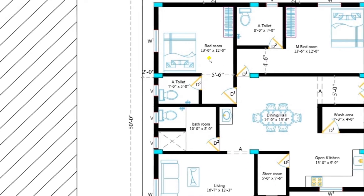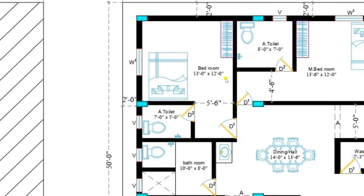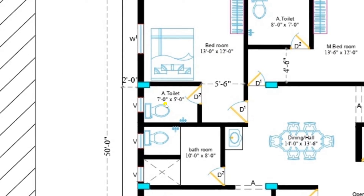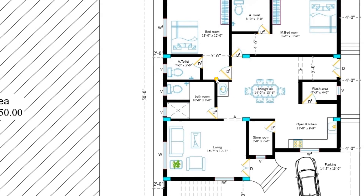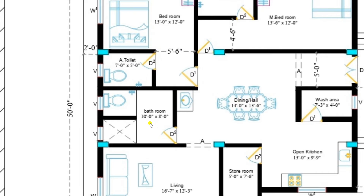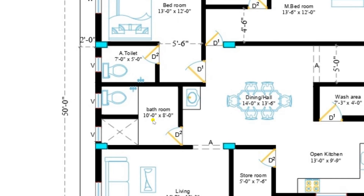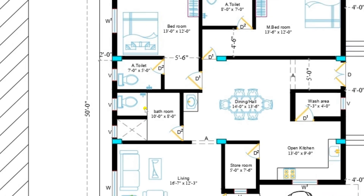Now let us move towards the other bedroom, which is of size 13 feet by 12 feet. It also has an attached bathroom of size 7 feet by 5 feet. So this plan has 2 bedrooms and 1 hall. There is also a common toilet available for all other members, of size 10 feet by 8 feet, with bathroom and toilet attached.